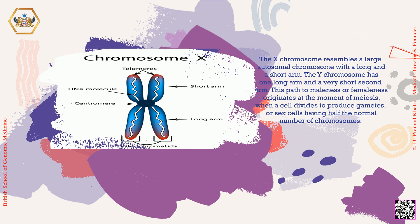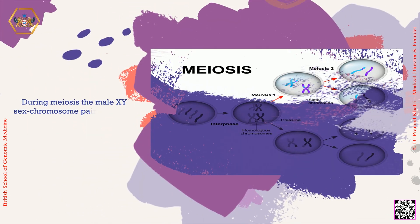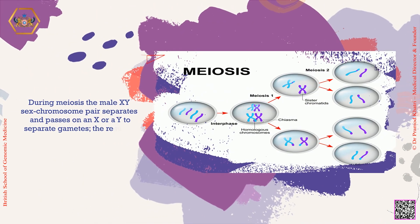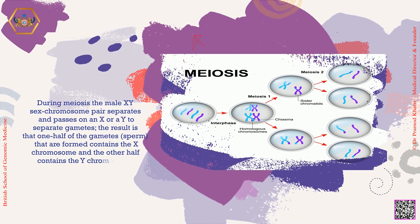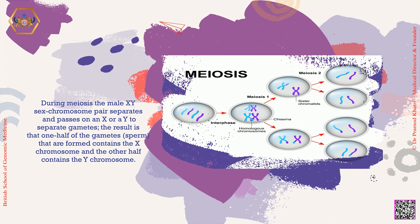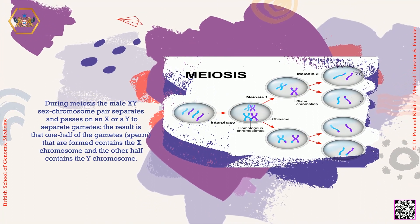This path to maleness or femaleness originates at the moment of meiosis, when a cell divides to produce gametes, or sex cells having half the normal number of chromosomes. During meiosis, the male's X and Y chromosome pair separates and passes on an X or a Y to separate gametes.